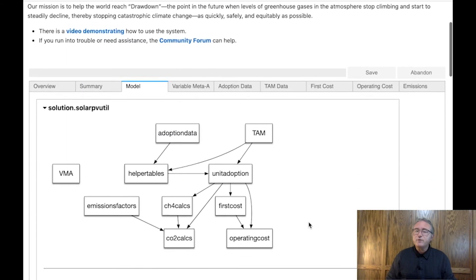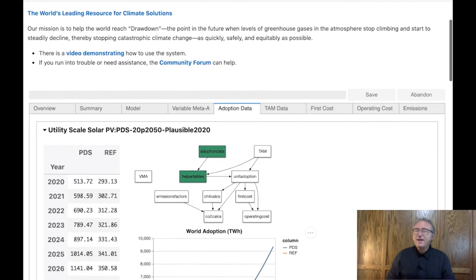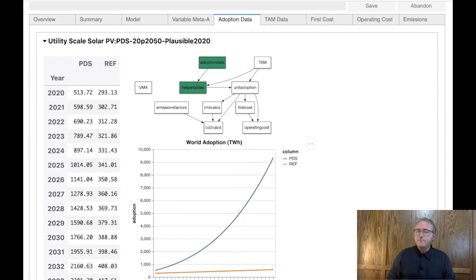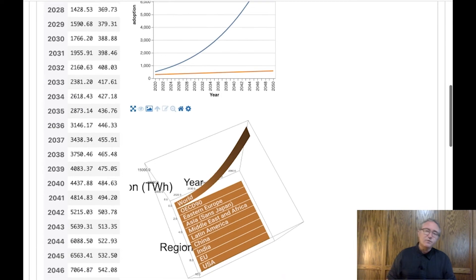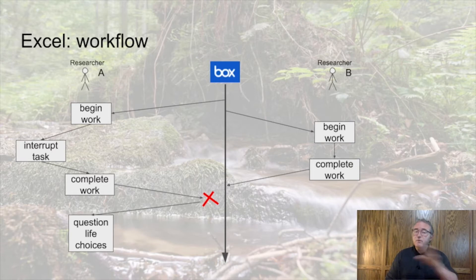As each JupyterHub user gets a home directory and their own copy of the repository, it is fairly heavy to run. The advantage comes in terms of the workflow that this enables. The workflow in working with the Excel version of the model is really that one researcher can work on a given file at a time. If multiple people each make modifications in a local version, like adding data sources, there's no good way to merge their work. One of them will end up asking the other earnestly, and with great conviction,